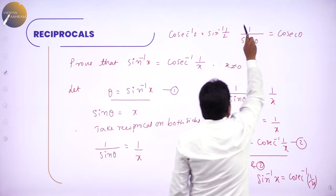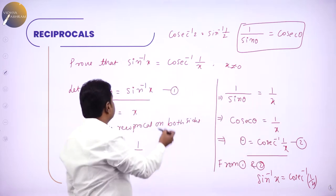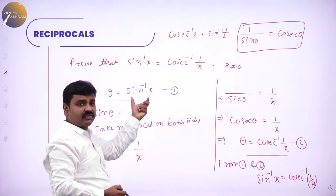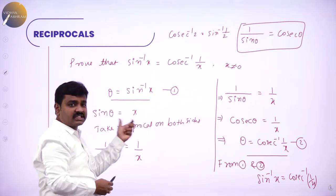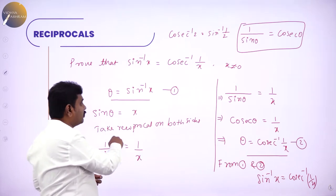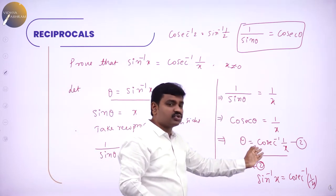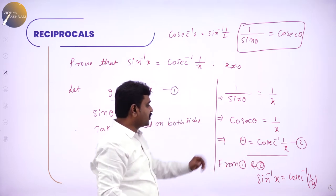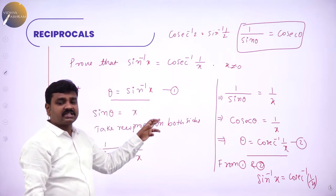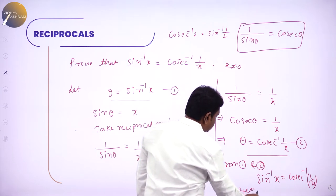To summarize the proof: the basic is reciprocal of sin is cosecant. Take theta equal to LHS, i.e., sin inverse x. Transfer sin inverse to the other side — it becomes sin theta equals x. Take reciprocal on both sides: 1 by sin theta equals 1 by x. You know 1 by sin is cosecant theta. Transfer cosecant to the other side — theta becomes cosecant inverse (1/x) (equation 2). From equations 1 and 2, LHS is the same, so equate RHS to get the proof. For example, cosecant inverse 2 equals sin inverse (1/2) and vice versa.